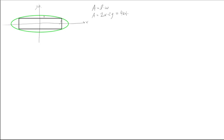That gives us area equal to 4xy. The other thing we know is that the equation of an ellipse is x²/a² + y²/b² = 1. We're doing this for a general ellipse and rectangle — not taking specific x and y values. What we want to do is eliminate one of these variables; right now we have two unknowns and we want to get it down to one.